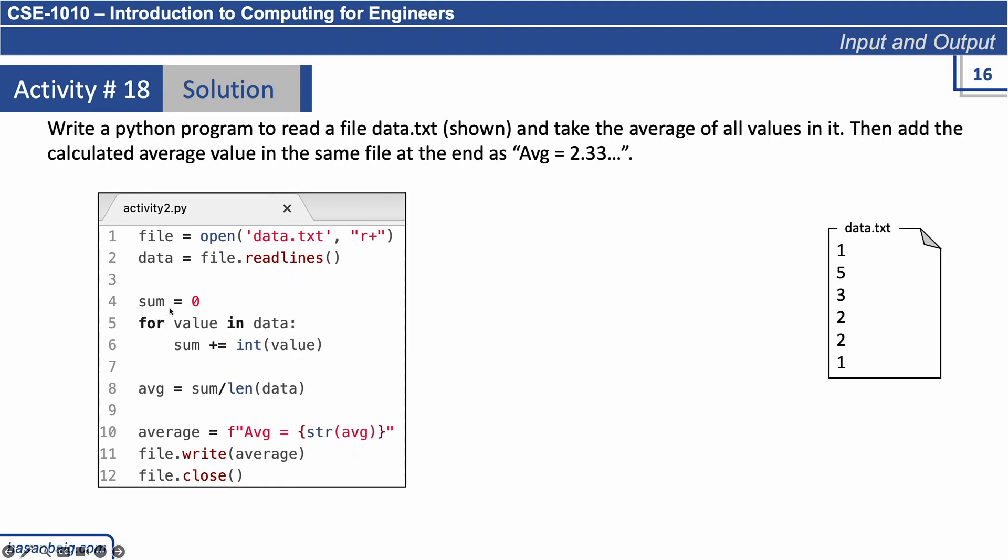So initialize the variable sum equals zero. For value in data, we are looping through, we are iterating through all the elements in data. So for the first time, the first value will be assigned to a variable name 'value', and then we convert that value into integer.